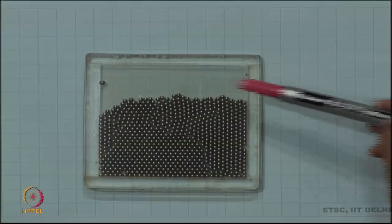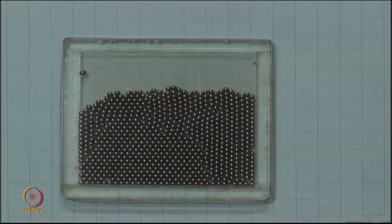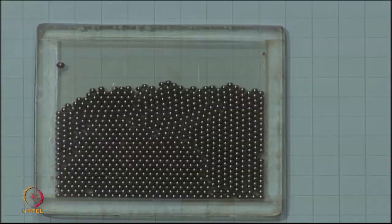If you can arrange two glass plates in which the ball bearings can move, you have a nice model, a two-dimensional model of a crystal which will show you the grain boundaries and some other defects.